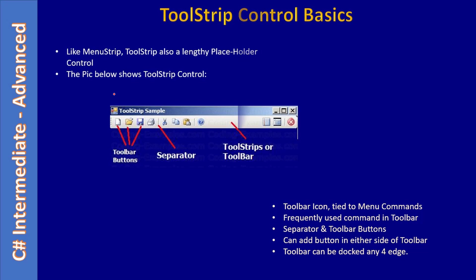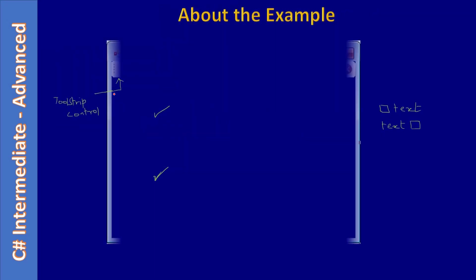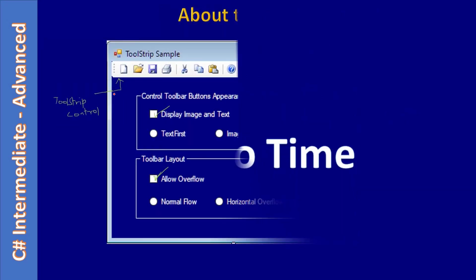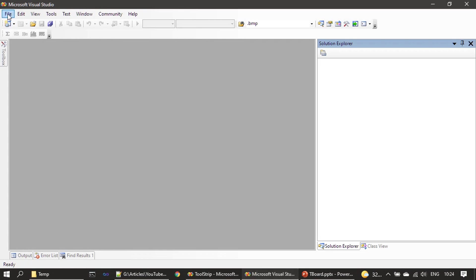Now let's go directly to the demo and see how to add the toolbar buttons to the ToolStrip control. We will also see how to assign an image icon to the ToolStrip button, then we will handle the events.